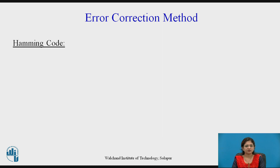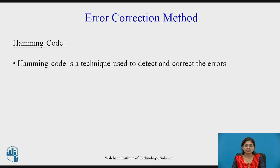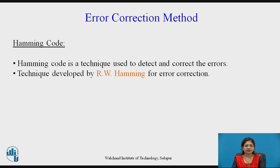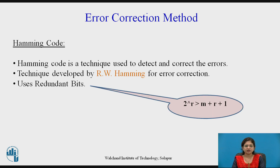Hamming code is a technique used to detect and correct errors, developed by R.W. Hamming. It uses redundant bits calculated with the formula: 2 raised to the power r must be greater than m plus r plus 1, where r represents redundant bits and m represents the total number of data bits.